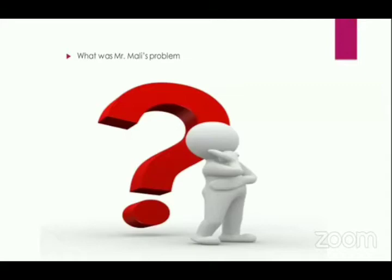Maybe another problem could have been management, because we know management accounts for almost more than 70% of the cow's production. If it was not performing at Mali's place and then goes to the other side and performs, maybe the feeding or whatever changed, and suddenly the cow that was not performing became the best.